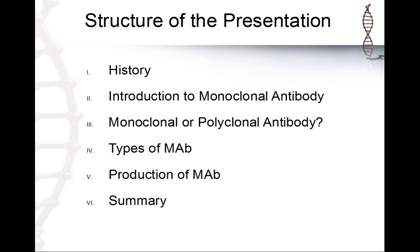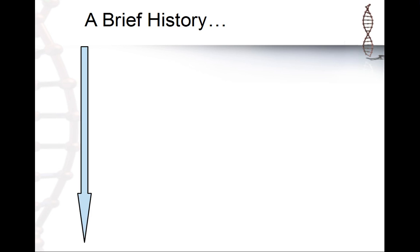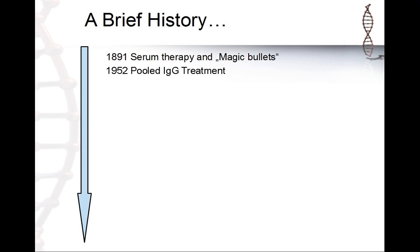So the brief history: in 1891 there was the first serum therapy and people talked about the 'magic bullet,' which they assumed to be present in the blood. Then in 1952 there was the first pooled IgG treatment — we will later come to this topic.